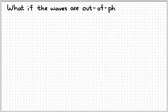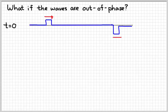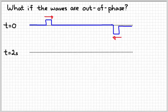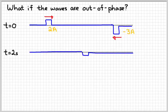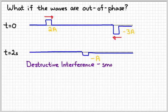What happens if the two waves are out of phase? Out of phase means that instead of them both being up, one is up and one is down. So maybe the two waves now look like this. They'll travel towards each other and interfere at 2 seconds. This time, instead of an amplitude of 2a and 3a, I can say the amplitude is 2a and negative 3a. The displacement due to the wave on the right is downward, so you call it negative. That results in a wave with an amplitude of negative a. This kind of interference is referred to as destructive interference, meaning you get a smaller displacement — a displacement of a, which is smaller than both 2a and 3a.